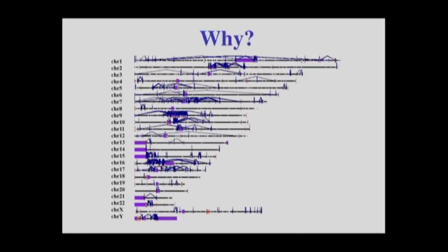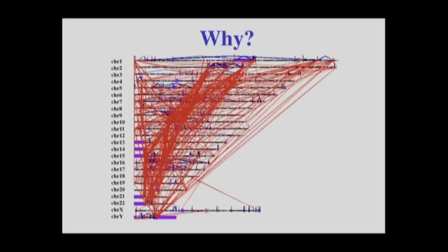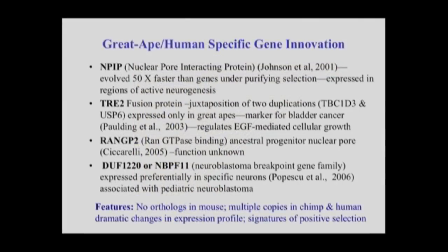So the question some of you might be asking — one we've asked for the last 10 years — is essentially: why? Why would we possibly have this type of architecture if it's predisposing our population to increased burden and susceptibility to diseases such as autism, schizophrenia, and intellectual disability? The answer, I think, partly lies in the fact that in these core sequences it's not just generic sequence, but embedded therein are rapidly evolving genes and gene families. Our group, along with about four others, has characterized these gene families over the last few years.